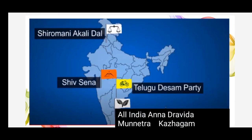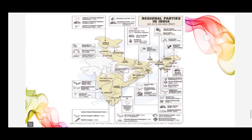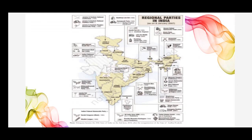Some of the popular regional parties in India are: AIADMK, All India Anna Dravida Munnetra Kazhagam; Shiromani Akali Dal, which is in Punjab; TDP, Telugu Desam, in Andhra Pradesh; Shiv Sena in Maharashtra, etc. You can also see many parties on the India map given on page number 82. You can examine each state clearly to see which party exists there.